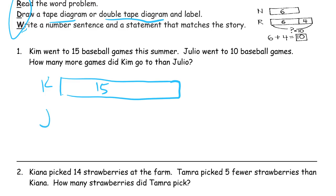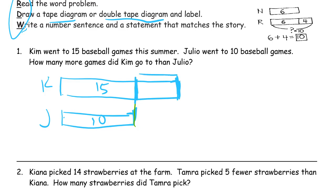Julio went to 10. Ten is going to be less than 15. In our picture, we want to know how many more. So the 10 goes to here, and that's about where it would be on the 15. So the 15 is this much more than the 10. We can call this part here M for the more — that's how many more we're trying to find out.